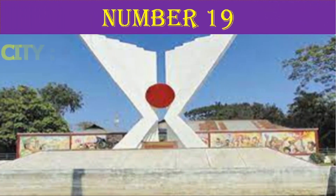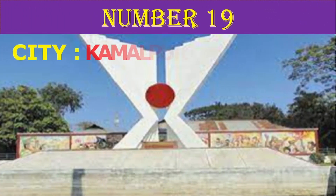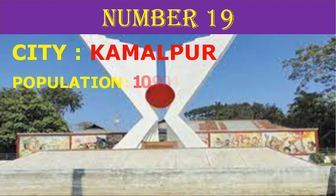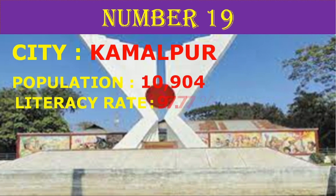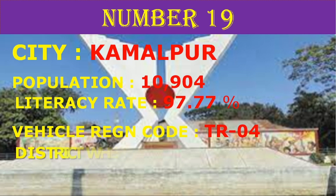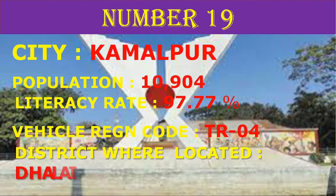Number 19: City Kamalpur. Population 10,904. Literacy rate 97.77%. Vehicle registration code TR-04. District where located: Dhalai.